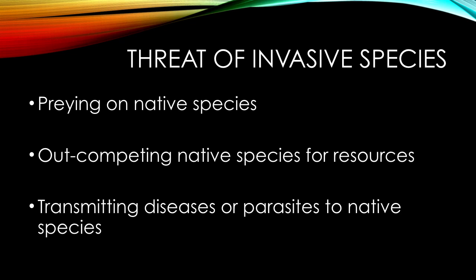Perhaps a less obvious, but equally dangerous threat is the foreign diseases or parasites invasive species can bring with them. Native species have no natural defense to these exotic diseases and often fall ill or may even die. A classic example is the American chestnut blight, accidentally introduced to the United States from Japanese nursery stock in 1904. Over 100 years later, a once common species of tree is now critically endangered, because these trees are still unable to resist this exotic fungus that hitched a ride over from Japan on common ornamental trees and plants.